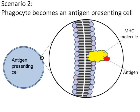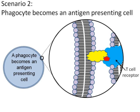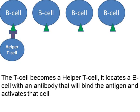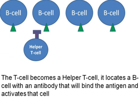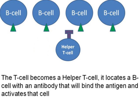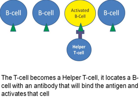Scenario two is when a phagocyte presents an antigen. The phagocyte has hunted down a bacteria or virus, engulfed it, processed it, and presents antigen to the T cell. This T cell — which again has a receptor that exactly fits the antigen on the MHC — becomes a helper cell. The job of the helper cell is to go from B cell to B cell, identifying a B cell that would actually bind specifically to the antigen. Once it locates that B cell, it activates it.